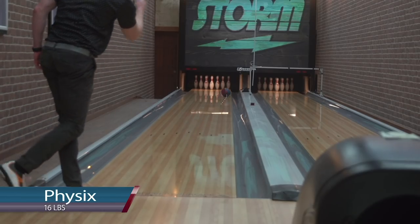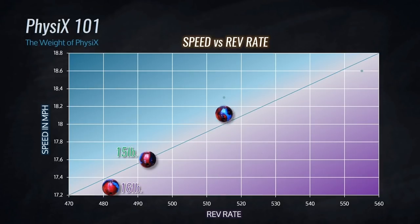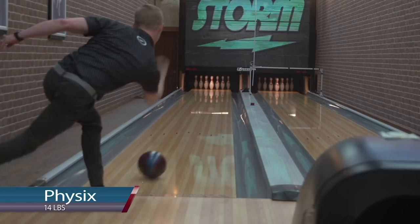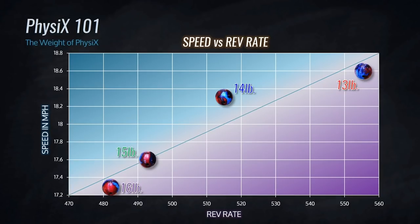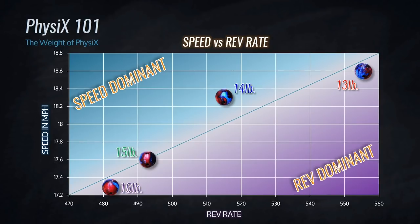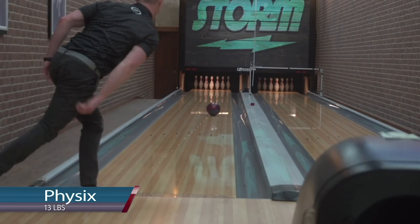I had to move in deeper with a steeper launch angle to get the ball to read the lane properly. Going the other direction, at 14 pounds my speed went up one mile per hour — actually a lot more than you might think — and my revs increased to about 515. Because the speed went up so much, this forced me back right with much less launch angle, putting me in the speed dominant category. At 13 pounds my rev rate jumped dramatically to about 550 but my speed only went up two tenths of a mile an hour. My ball speed comes mostly from my legs, not my arm, so lighter weight doesn't make my feet faster. But my arm and hand don't have to work as hard, which explains the big rev increase. This put me back into the rev dominant category, forcing me back left with more launch angle and a deeper set down.